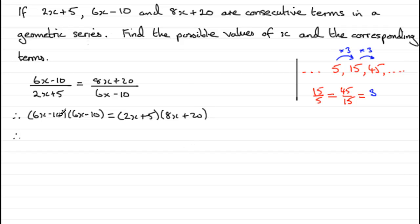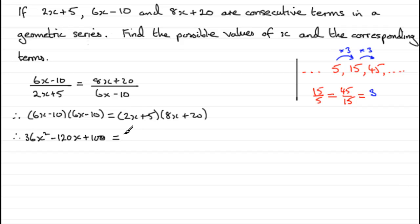So if we expand the brackets, we've got 36x squared, minus 60x, minus another 60x — that's minus 120x — and then minus 10 times minus 10 is plus 100. That equals 2x times 8x, which is 16x squared, then 2x times 20 is 40x, and 5 times 8x is another 40x, so we've got a total of 80x, and finally 5 times 20 is plus 100.